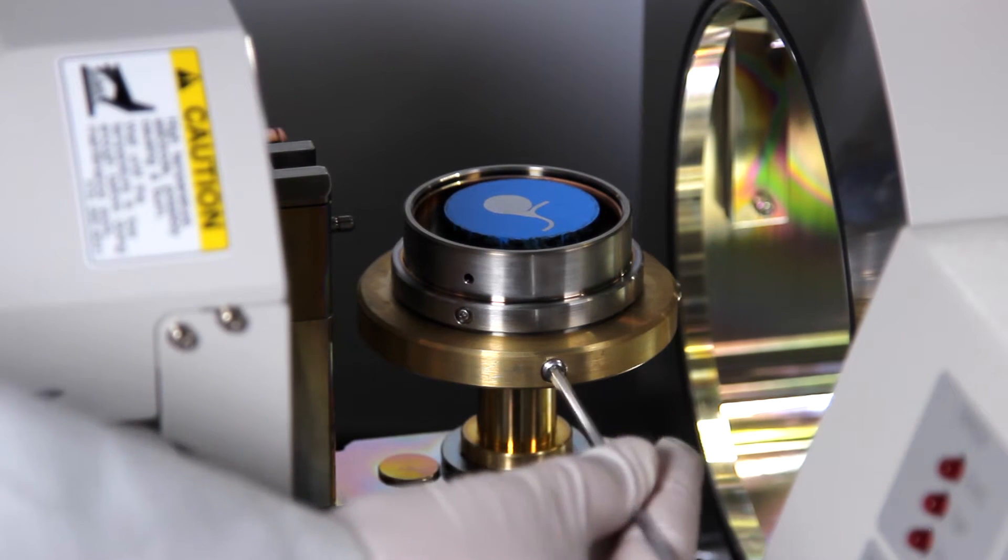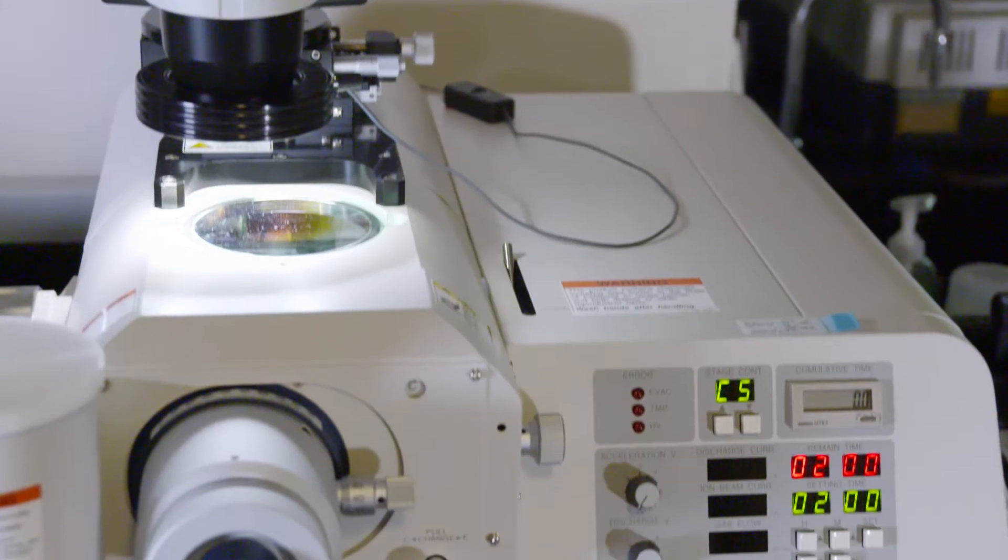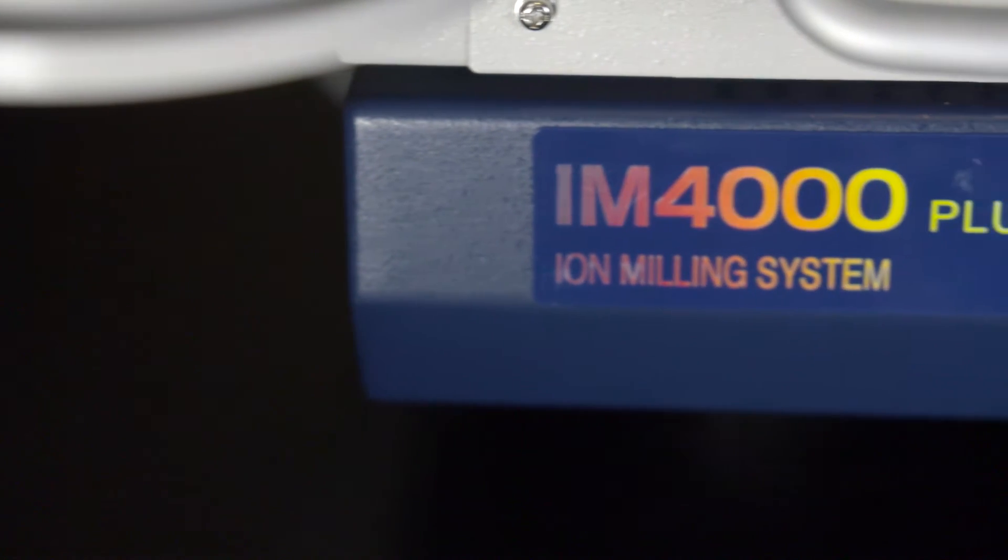The hybrid function of the Ion 4000 Plus combines both milling configurations in one machine to satisfy a wide variety of materials and their applications.